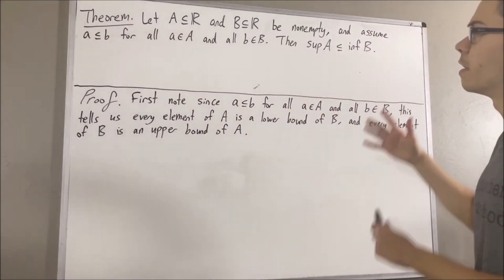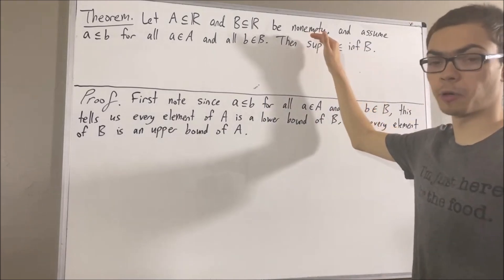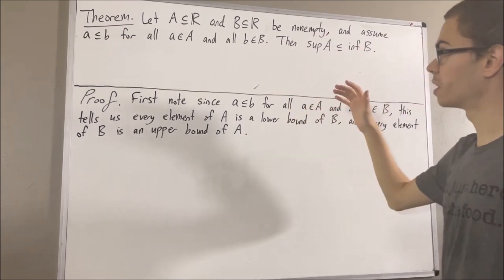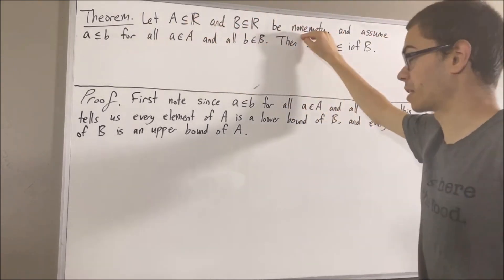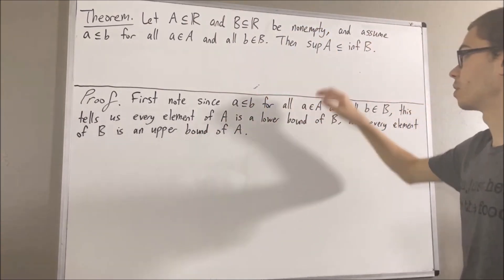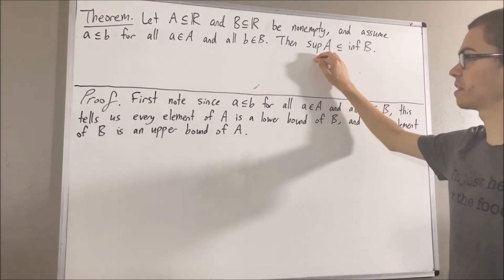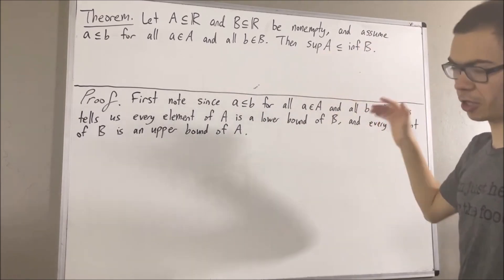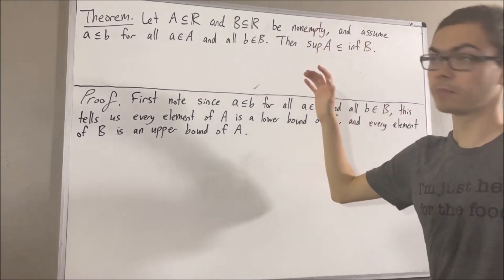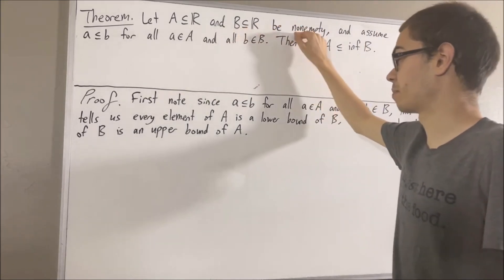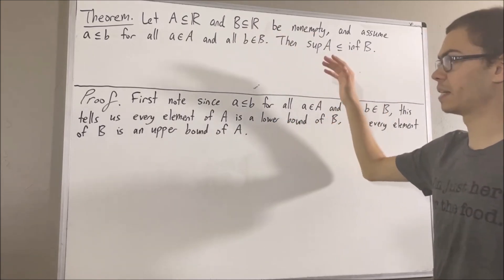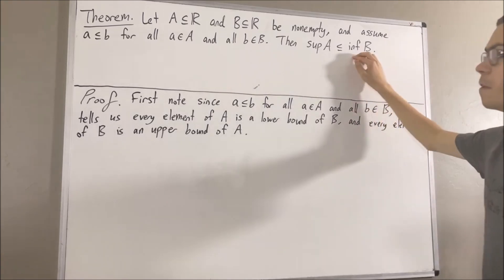And if you recall, every non-empty subset of real numbers with an upper bound has a supremum. So, since A is a non-empty subset of real numbers with an upper bound, this tells us that the supremum of A exists. Similarly, every non-empty subset of real numbers with a lower bound has an infimum. So, since B is a non-empty subset of real numbers with a lower bound, this tells us that the infimum of B exists.